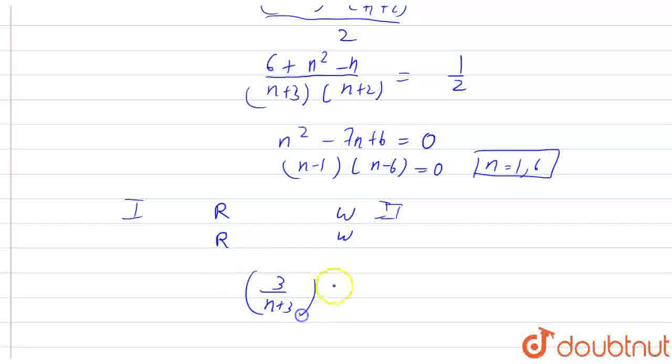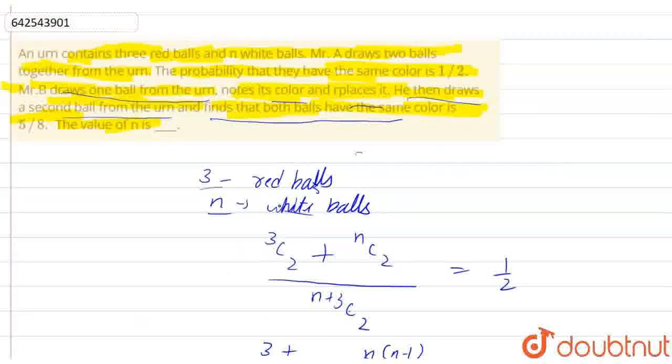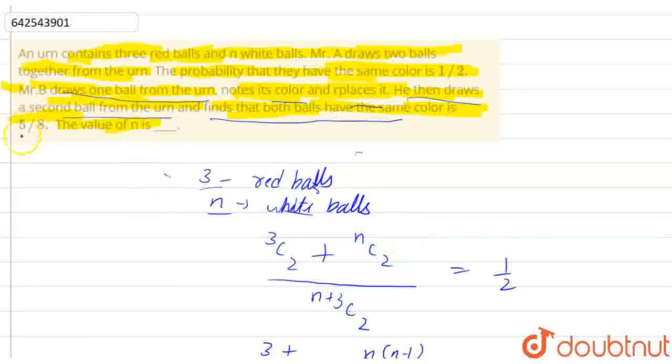So the probability of this will be 3 out of n plus 3 times 3 out of n plus 3 because both times it is red, or it will be n upon n plus 3 times n upon n plus 3 when both times it is white. Total probability will be this and it is given to us as 5 by 8.